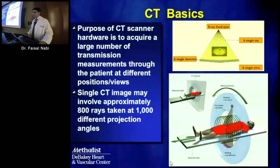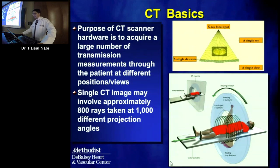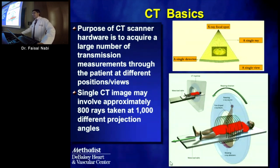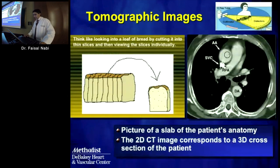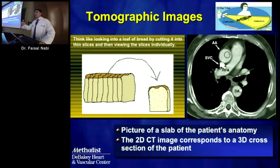A CT machine consists of a motorized table, an x-ray source, the patient in the middle within the bore, and x-ray detectors on the opposite end of the x-ray source. Rays of radiation are transmitted through the patient in a cone-shaped fashion in current-day scanners. You can think of CT as creating axial 2D images like slices of a loaf of bread—each image represents a particular slice location or slab of the patient's 3D anatomy.